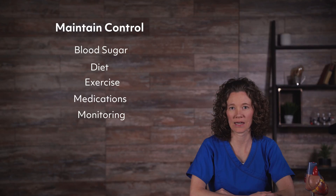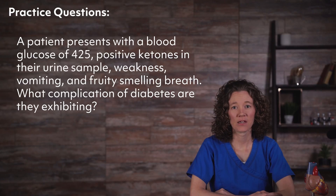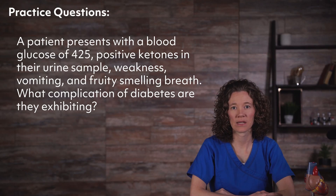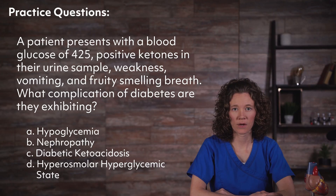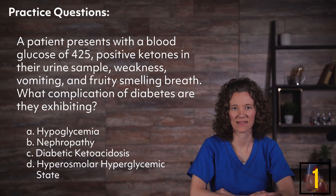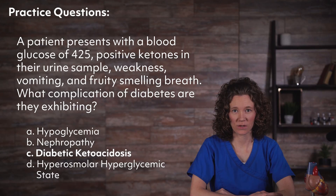In order to prevent and avoid the complications associated with diabetes, achieving and maintaining adequate control of blood sugar through diet, exercise, medications, monitoring, and education is a must. Review question: A patient presents with a blood glucose of 425, positive ketones in their urine sample, weakness, vomiting, and fruity-smelling breath. What complication of diabetes are they exhibiting? A) hypoglycemia, B) nephropathy, C) diabetic ketoacidosis, or D) hyperosmolar hyperglycemic state? If you chose C, diabetic ketoacidosis, you're right — those are all signs and symptoms of DKA.